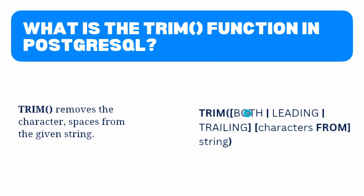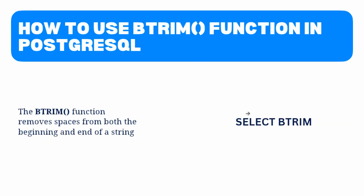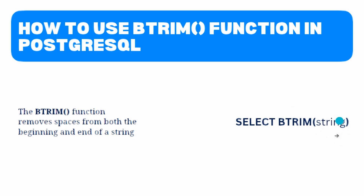Now move to the next topic — how to use the btrim function in PostgreSQL. The btrim function removes spaces from both the beginning and end of the string. The syntax for the btrim function is as follows: select, then we specify btrim. Then within the btrim function, we specify the characters that we want to remove from the string.